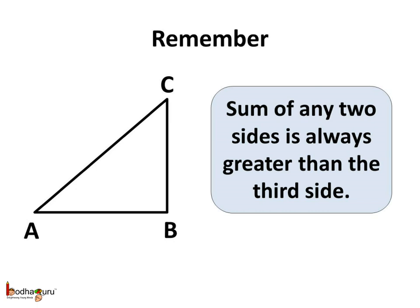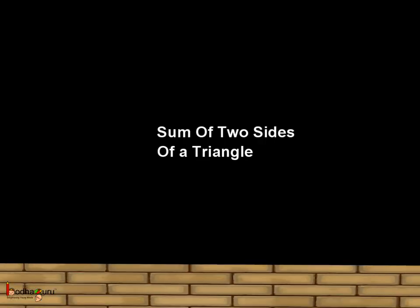So remember children, in any triangle the sum of any two sides is always greater than the third side. In triangle ABC here, the longest side is side AC, but even side AC is smaller than the sum of the other two sides, that is side AB plus side BC.